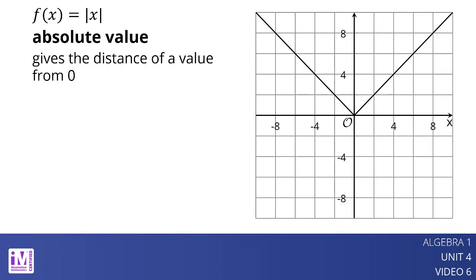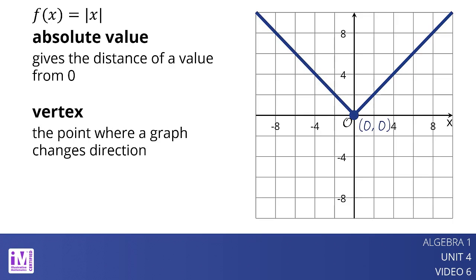The graph of function f is a v-shape with the two lines converging at 0, 0. We call this point the vertex of the graph. A vertex is the point where a graph changes direction from increasing to decreasing or vice versa.